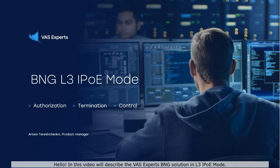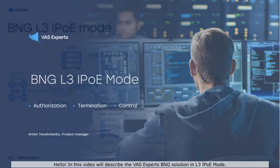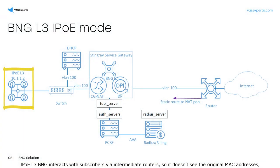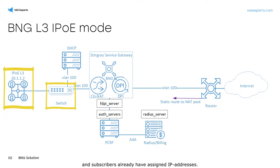Hello. In this video we'll describe the VAS Experts BNG solution in L3 IPOE mode. IPOE L3 BNG interacts with subscribers via intermediate routers, so it doesn't see the original MAC addresses, and subscribers already have assigned IP addresses.